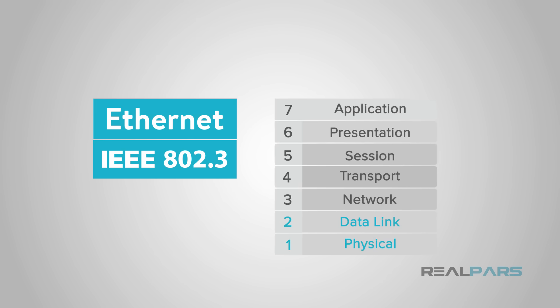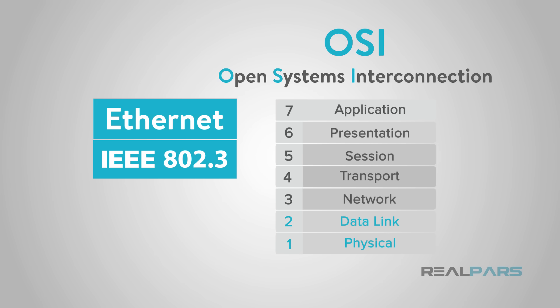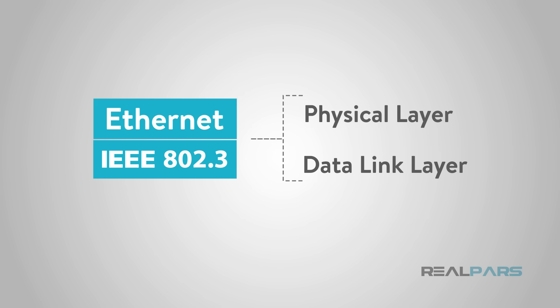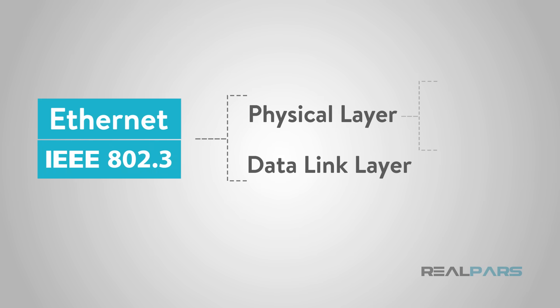These two layers are defined as the first two layers in the OSI, or Open Systems Interconnection, model. The physical layer consists of the following components: cabling and devices.